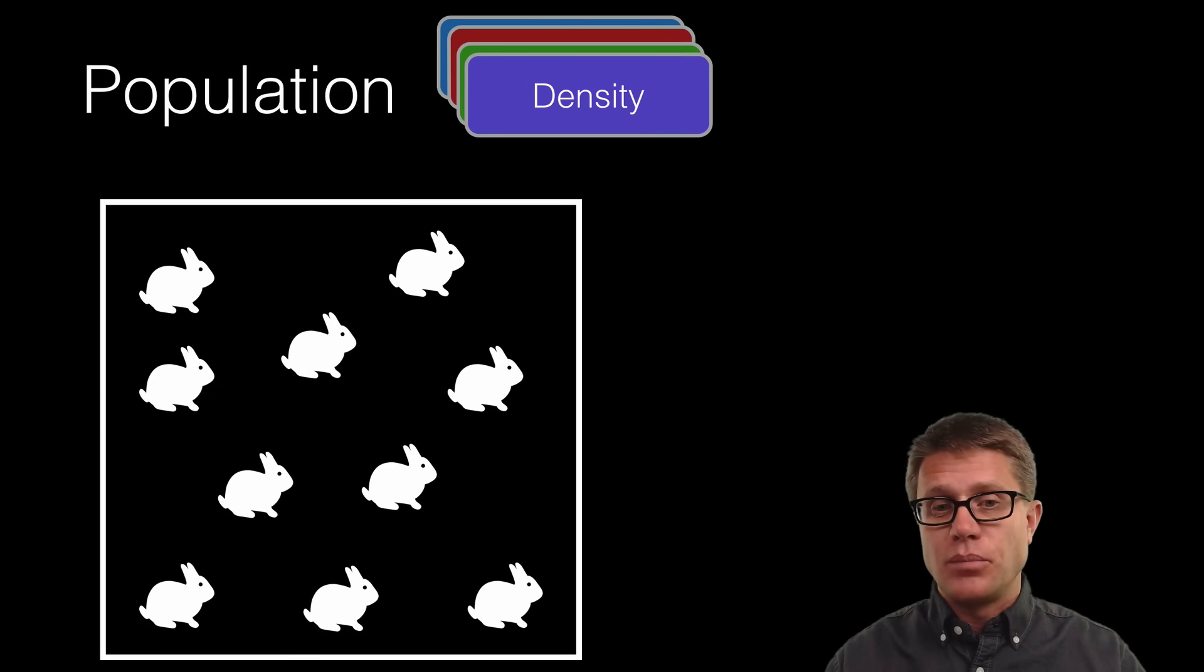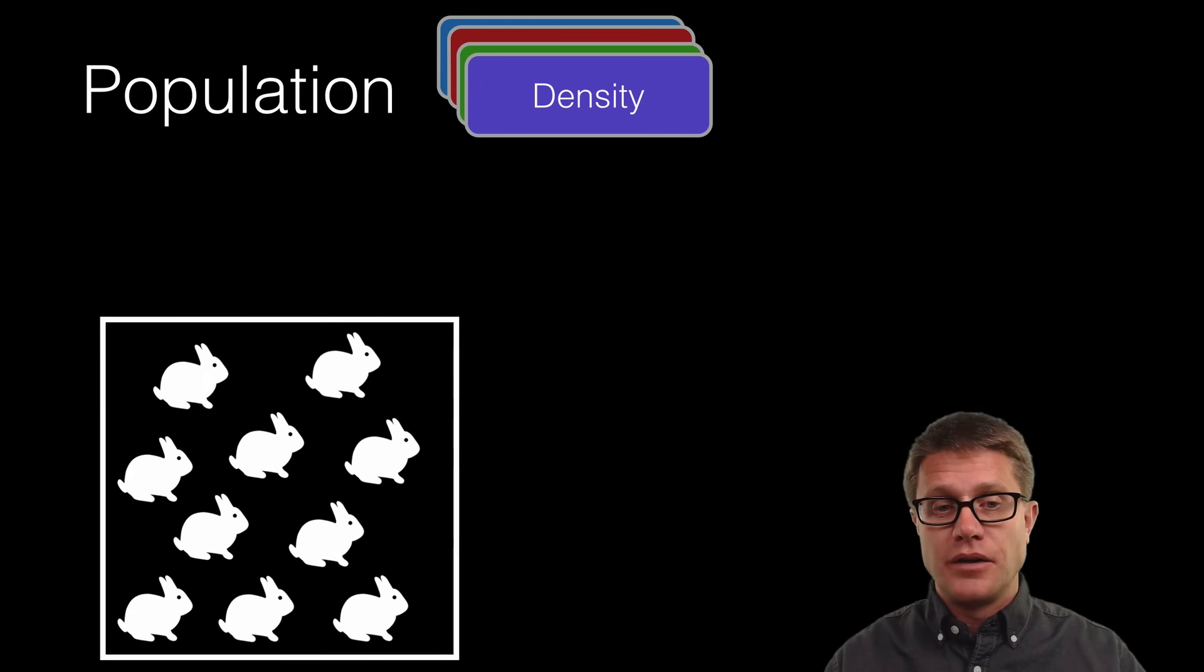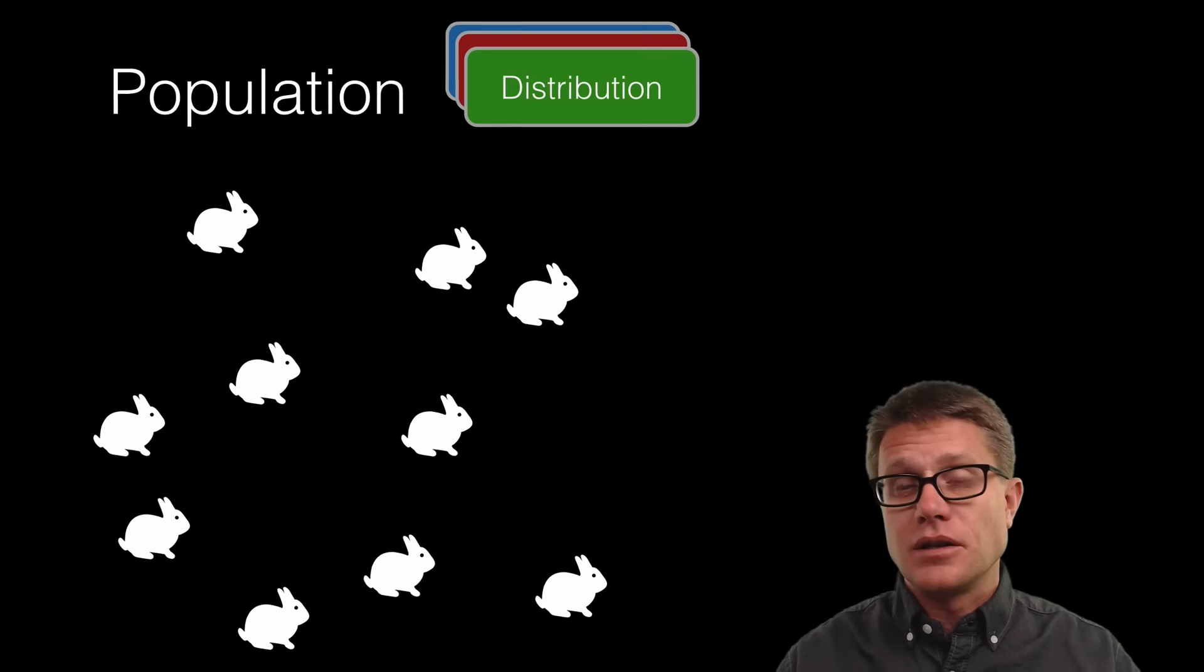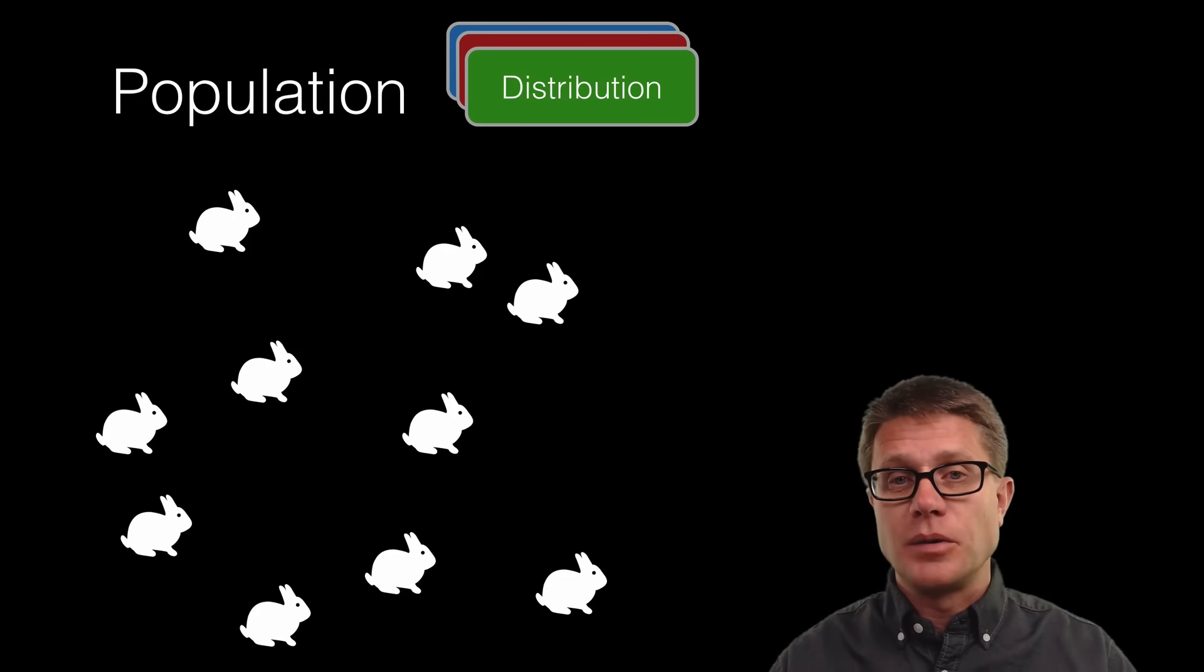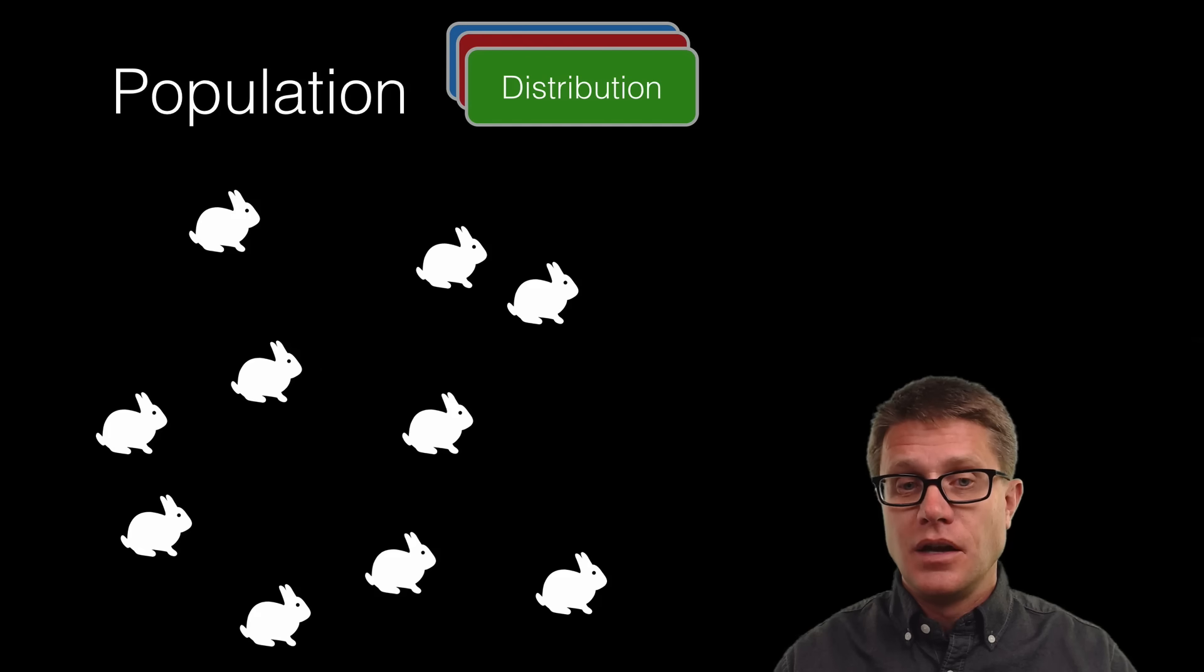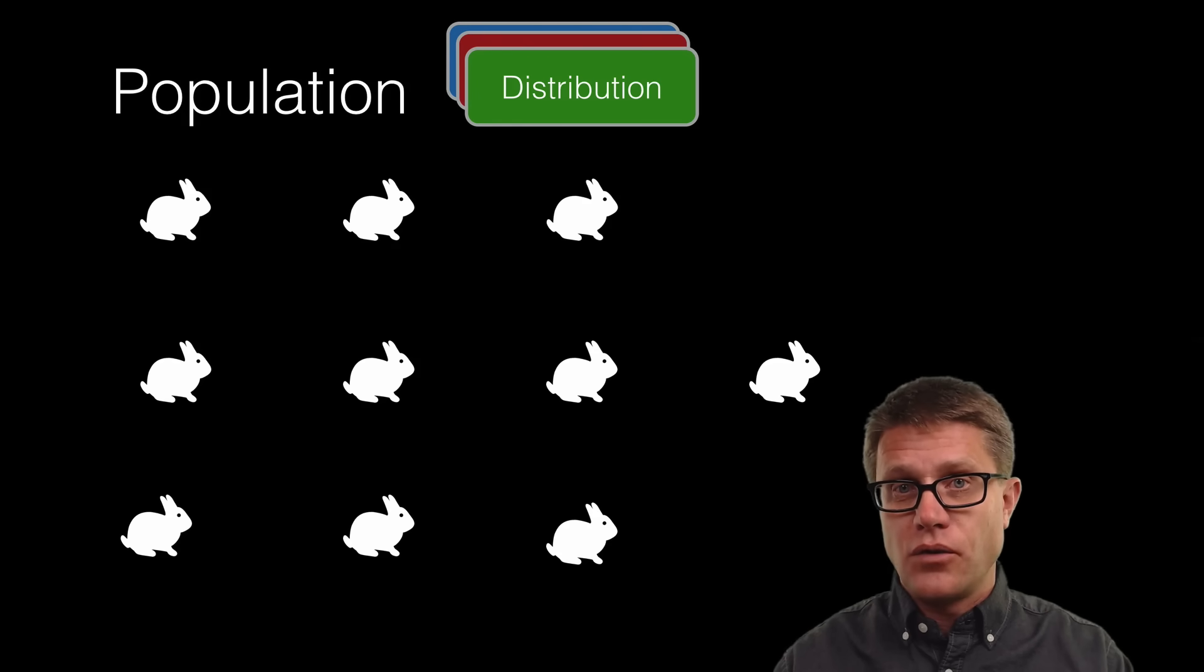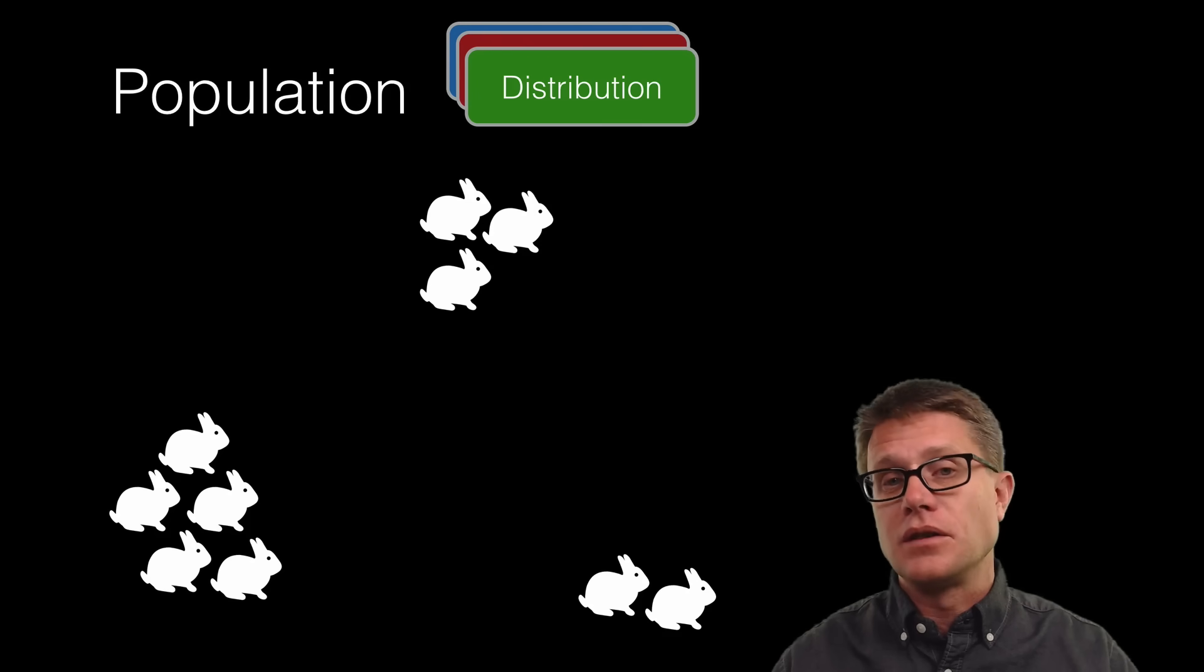But also density is important. That is the number of individuals we have in a given area. And so we could call this one density, but we would call this greater density. We could also look at their distribution. I would say that these rabbits are now randomly distributed. But they could be distributed uniformly or they could just be clumped in their distribution.